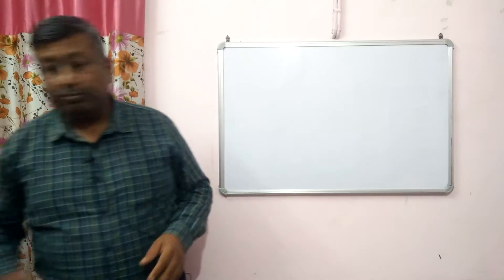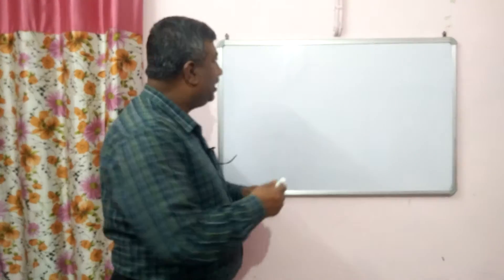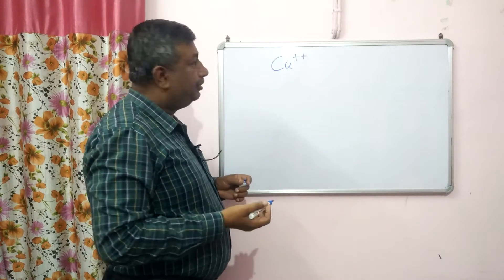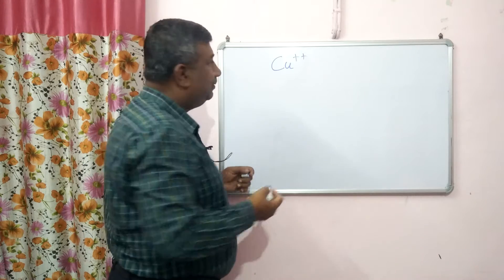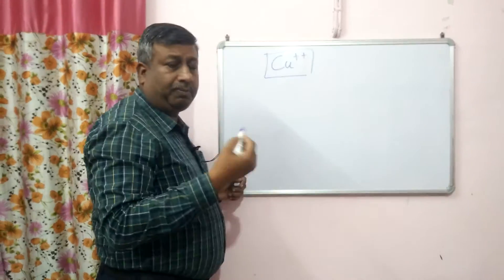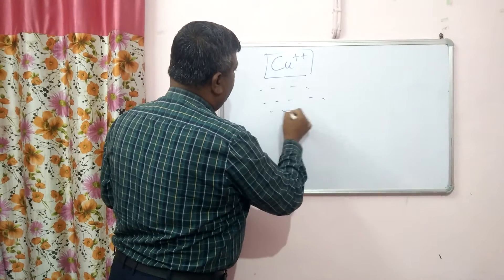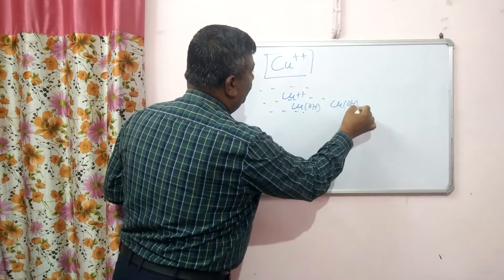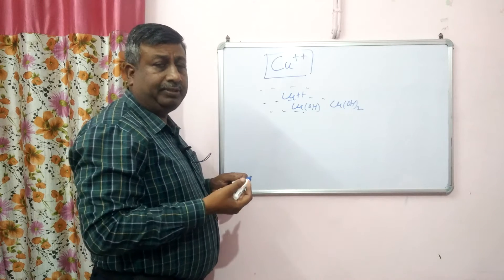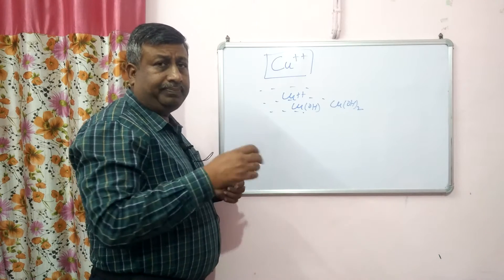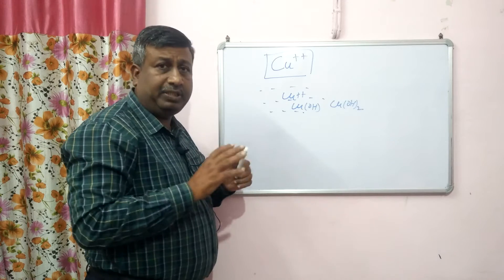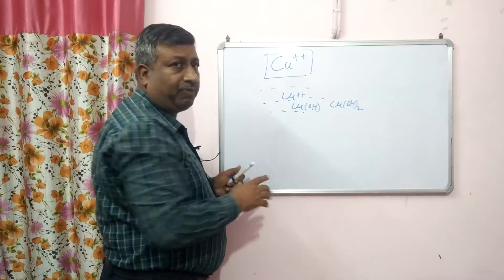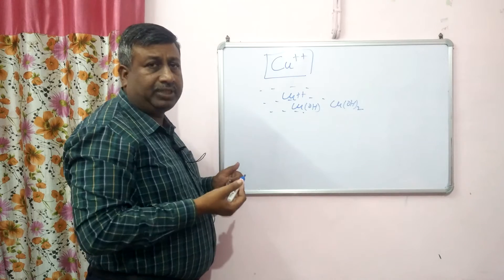Copper is an important micronutrient — we can say it is an essential micronutrient — and it is absorbed by the plant in the form of copper divalent Cu²⁺, which is a cation. It is a metallic cation and this is the available form. Different forms exist in soil solution: copper as Cu²⁺, copper hydroxide CuOH⁺, and Cu(OH)₂. Copper is also present on exchange sites, in organic matter, and on aluminium oxide and iron oxide. The important available form is Cu²⁺.